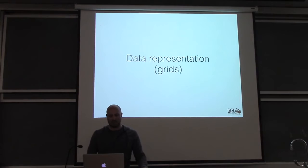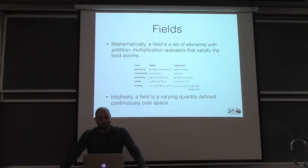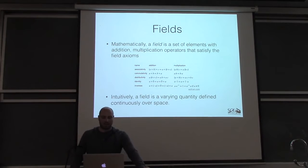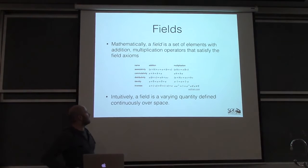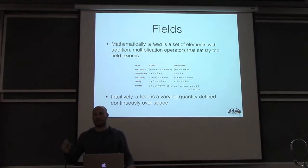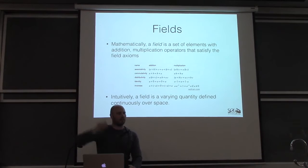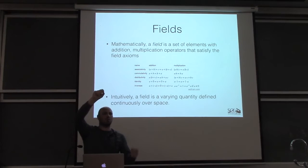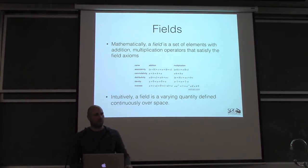Now I'll talk about how these data are represented — specifically grids. Before talking about grids, I'll talk about fields. Mathematically, a field is a set of elements with basic algebraic operators like addition and multiplication, satisfying the field axioms: associativity, commutativity, distribution, identity, and inverse. Intuitively, this is really a varying quantity defined continuously over space — you can pick a point anywhere and say this is the value at this point.